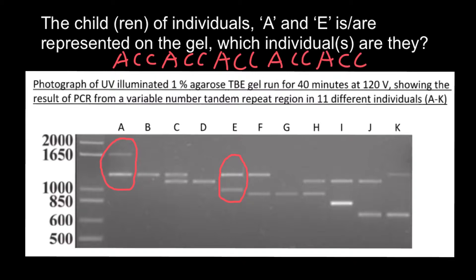Even the same person may have a different number of repeats on different chromosomes. For example, one chromosome inherited from the mother's side may have three repeats of this sequence, but another chromosome inherited from the father's side may have six such repeats.